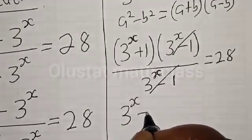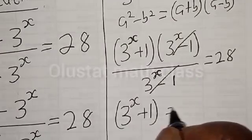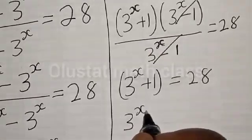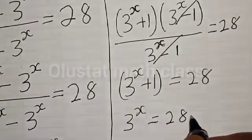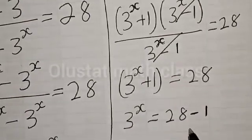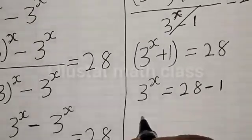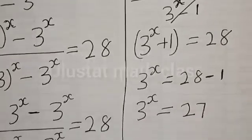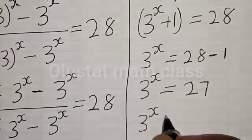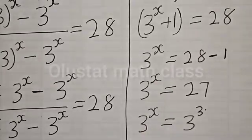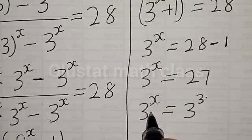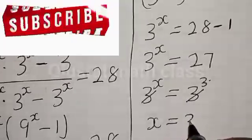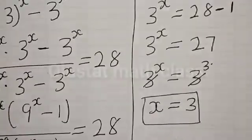We are left with 3 raised to power s plus 1 is equal to 28 minus 1, and 28 minus 1 is equal to 27. Then we have 3 raised to power s is equal to 27, which is 3 raised to power 3. We have the same base, so we cancel, therefore s is equal to 3. We've gotten the value of s which is equal to 3.